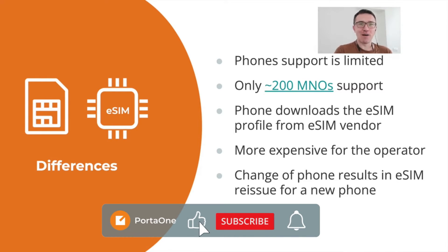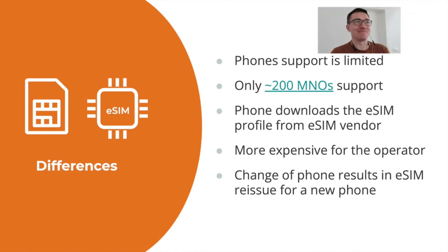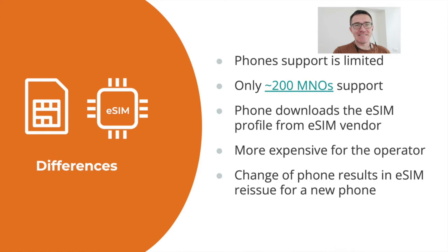Please press the like button and subscribe to our channel if you like eSIM and want it to become a dominant technology. So what else is different from a regular SIM? Crypto keys for the SIM card are so-called carved in stone — they are placed in non-changeable memory on the silicon microcontroller. So for a SIM card, we can say that crypto keys are carved in silicon.